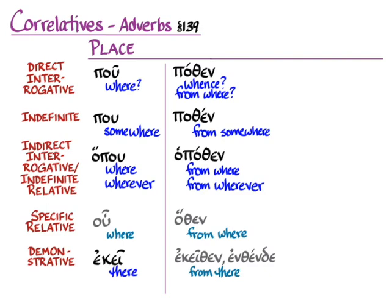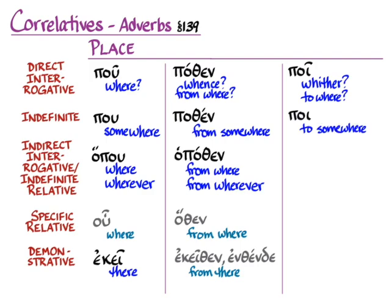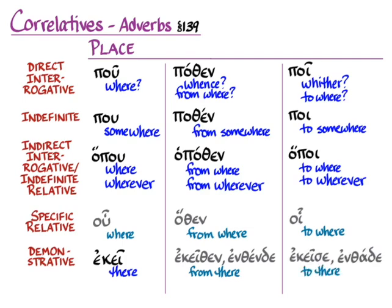If we want to go towards something, we need poi, meaning 'whither' — or 'to where' in modern usage. The enclitic version is indefinite: 'to somewhere.' The indirect interrogative — 'she asks to where you are going' — is hopoi. You can also use hopoi for the indefinite relative meaning 'to wherever.' Although Hanson and Quinn doesn't give it, there is a specific relative version, hoi. And for demonstratives, you would use ekeise or entautha, meaning 'to there' or 'to that place.'